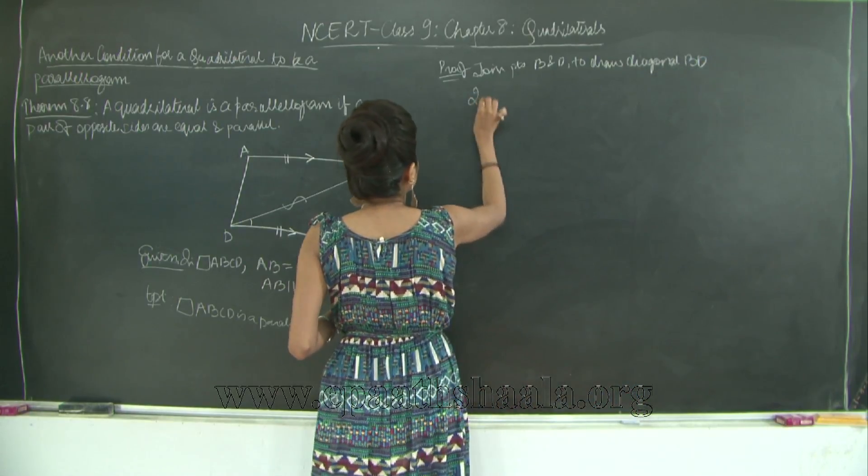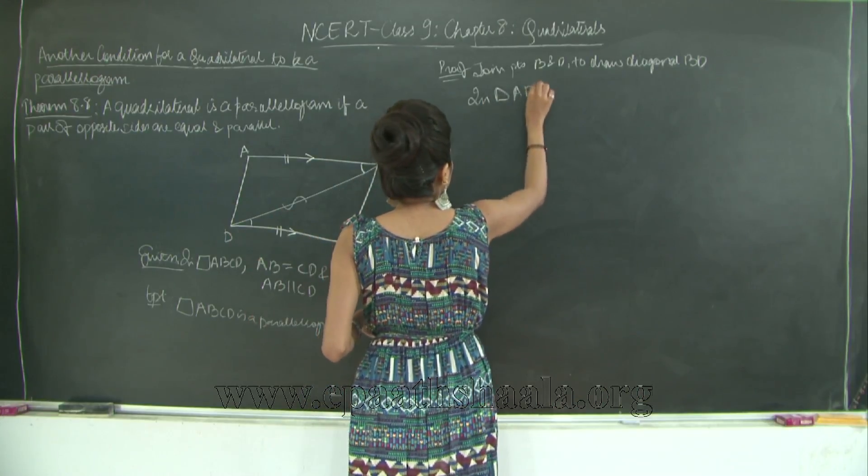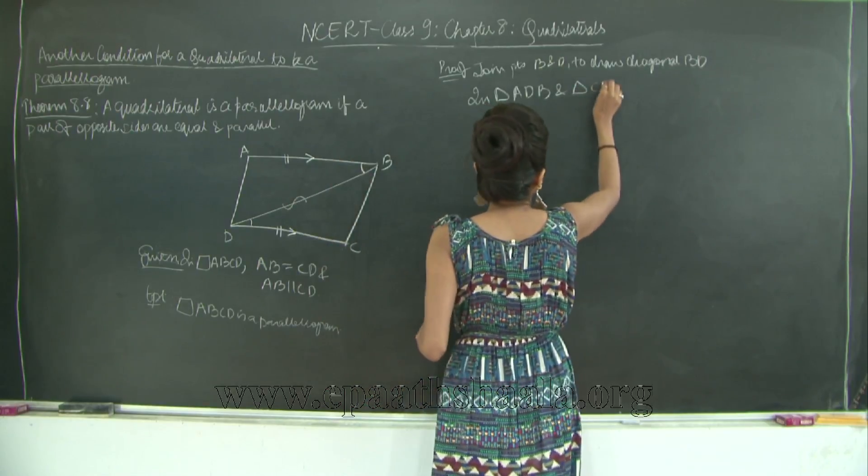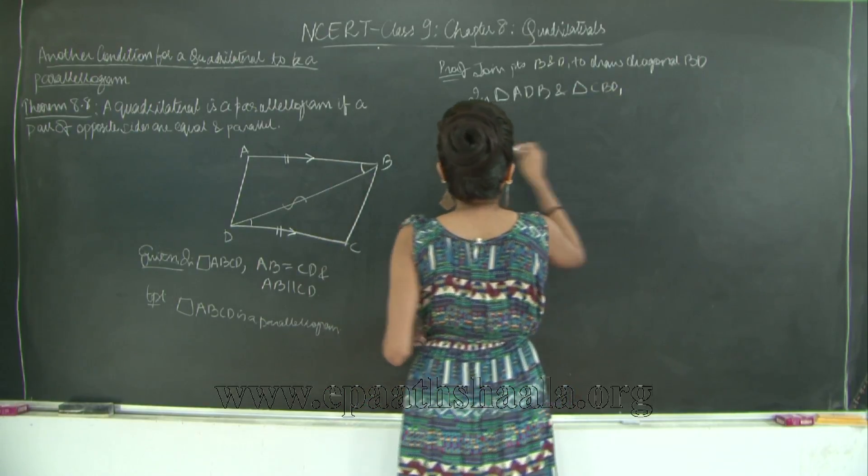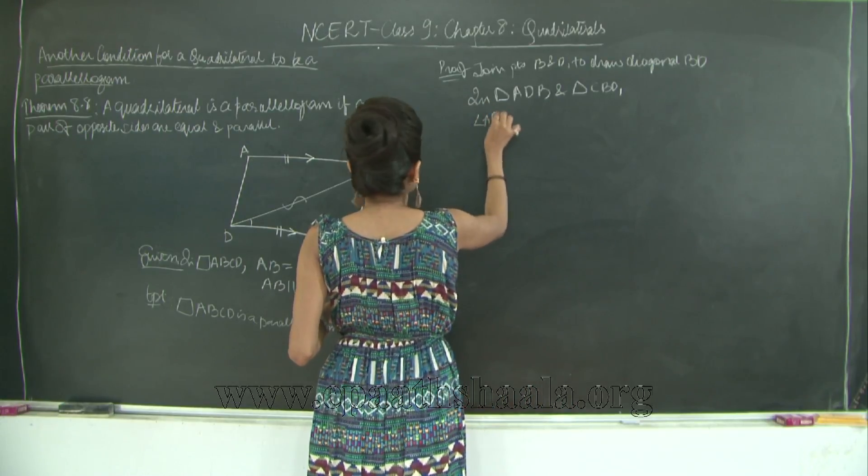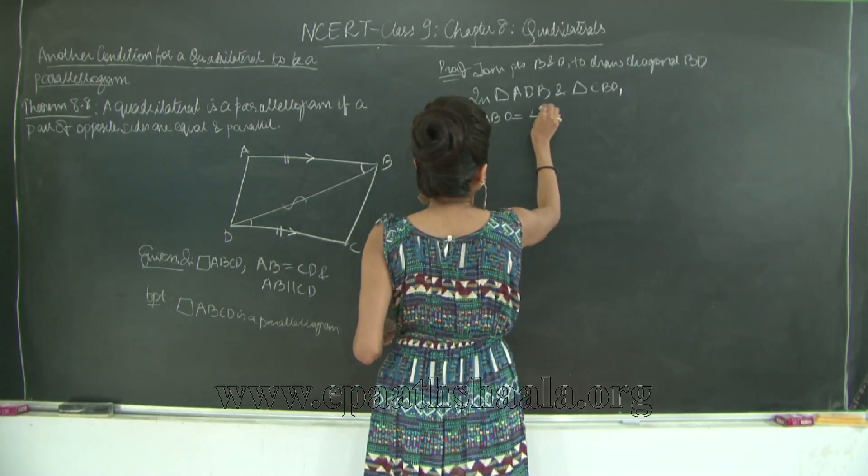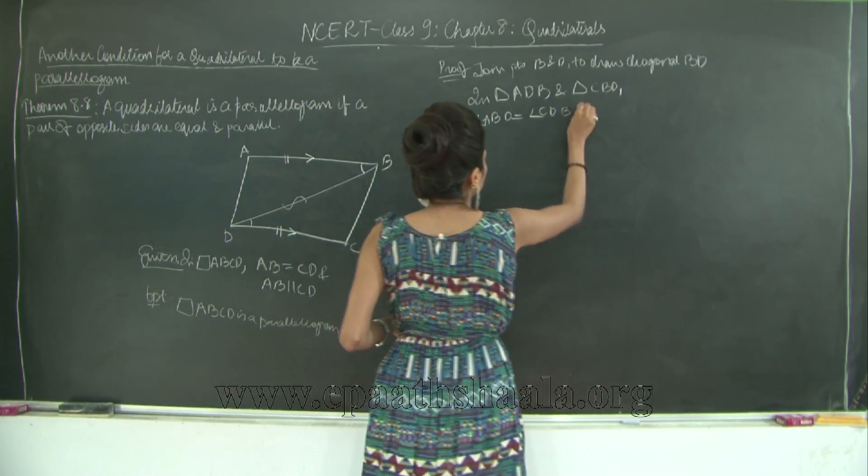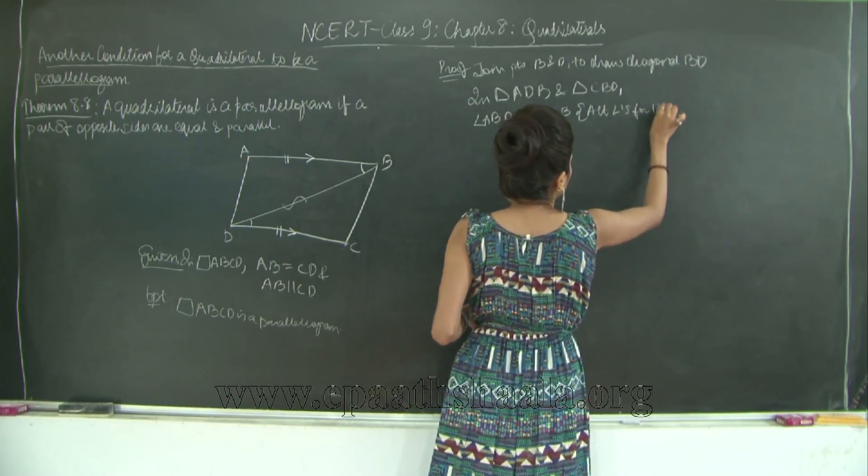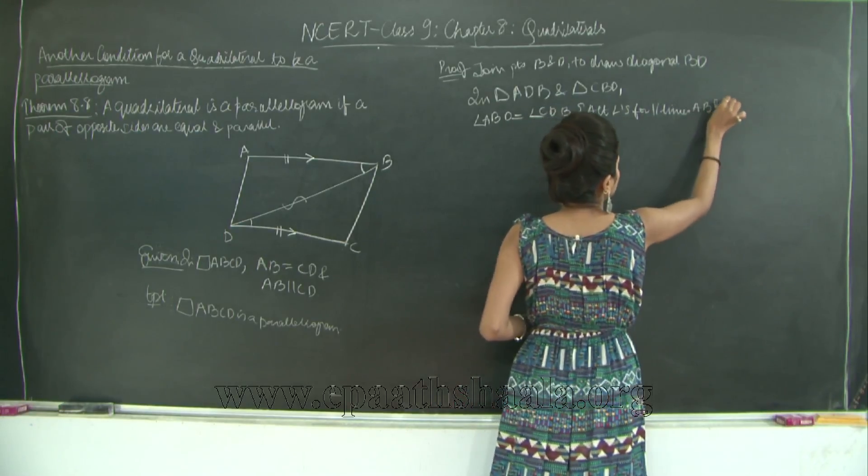In triangle ADB and triangle CBD, I have angle ABD is equal to angle CDB, alternate angles for parallel lines AB and CD.